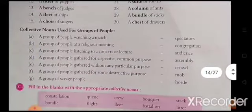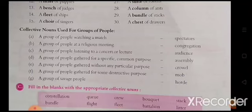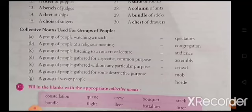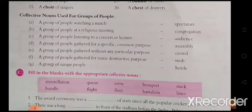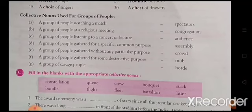Collective nouns used for groups of people: a group of people watching a match — spectators. A group of people at a religious meeting — congregation. A group of people listening to a concert or lecture — audience. A group of people gathered for a specific common purpose — assembly. A group of people gathered without any particular purpose — crowd. A group of people gathered for some destructive purpose — mob. A group of savage people — horde.